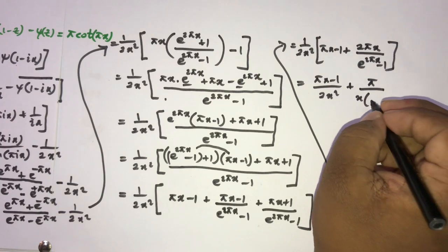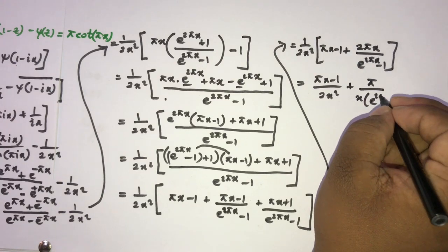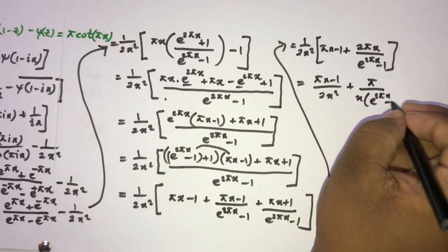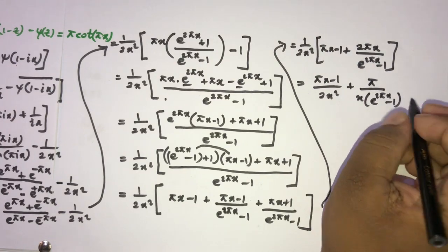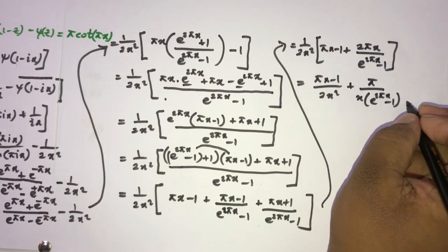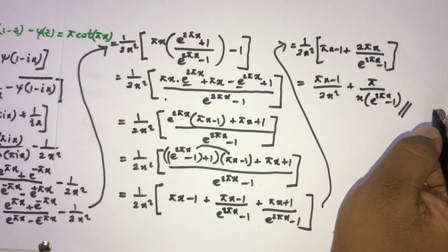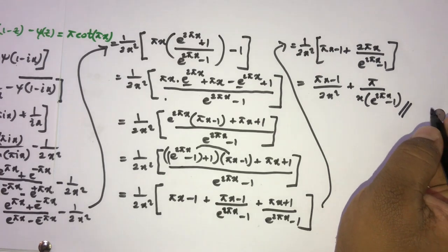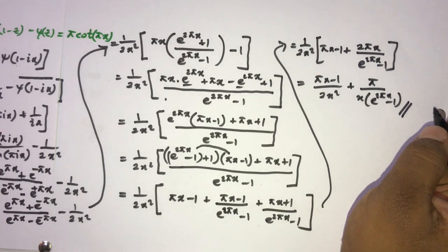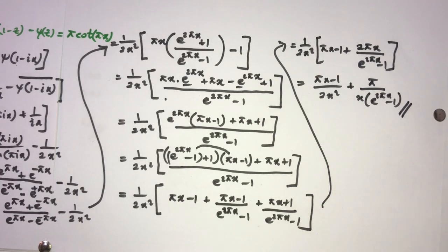So the final answer is π/(x · (e^(2πx) − 1)) minus 1/(2x²). This is the answer. If you like this video, please subscribe to this channel. Thank you for watching.